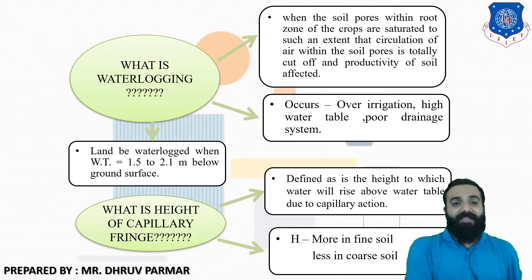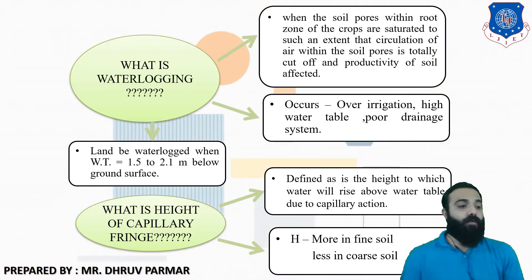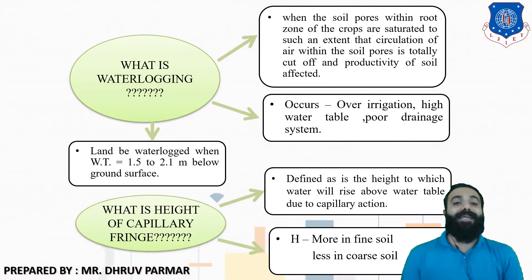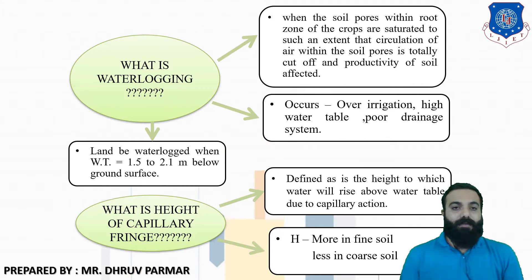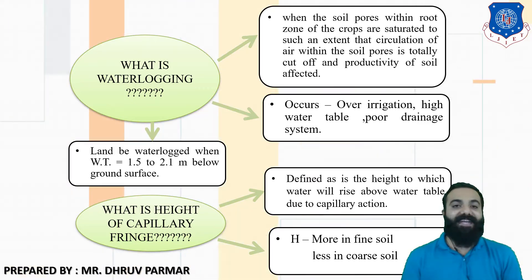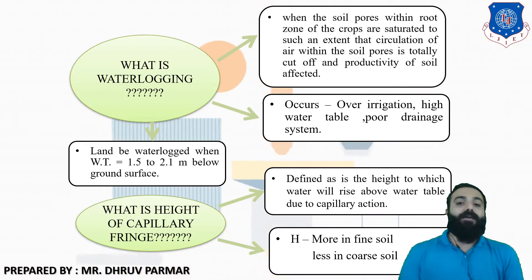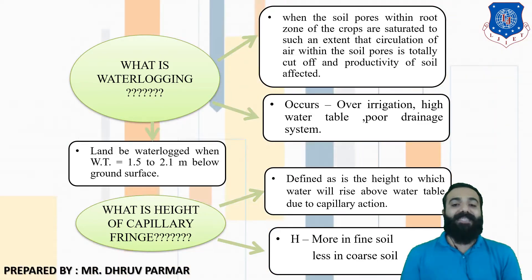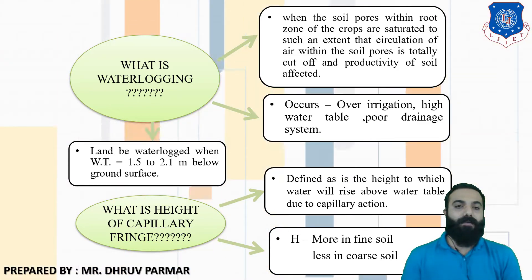The reasons for waterlogging include over-irrigation, high water table depth, and poor drainage systems. Another reason is capillary action, which you studied in fluid mechanics. It refers to the height to which water rises above the water table due to capillary action, called the height of capillary fringe. This height is maximum in fine soil and less in coarse soil.